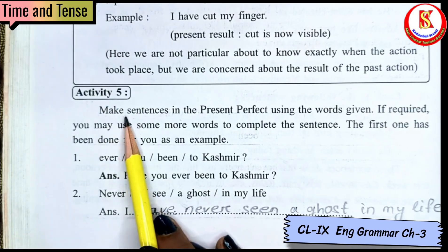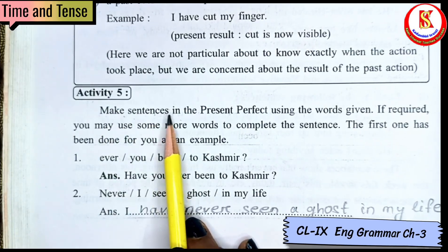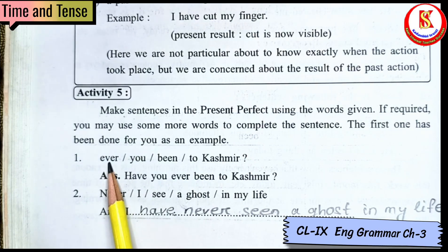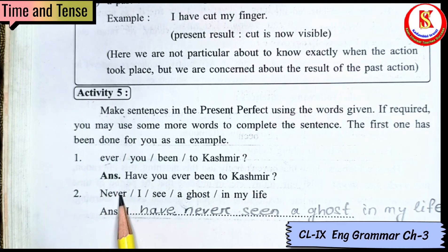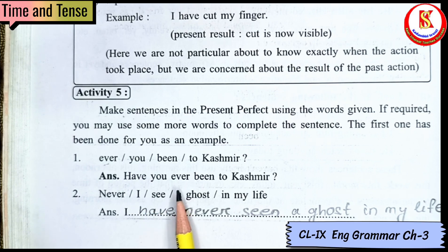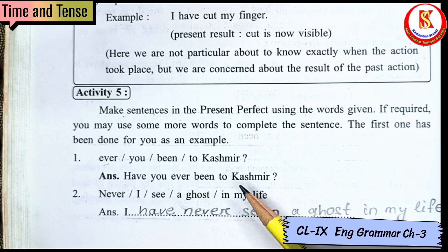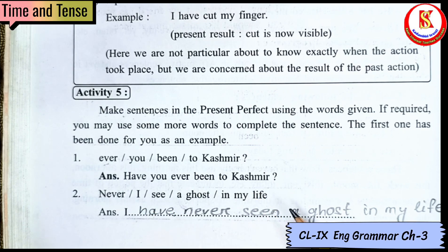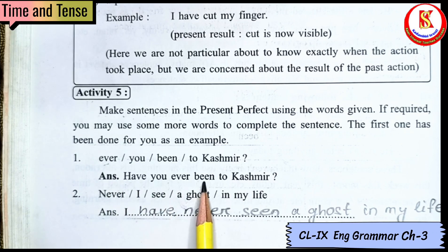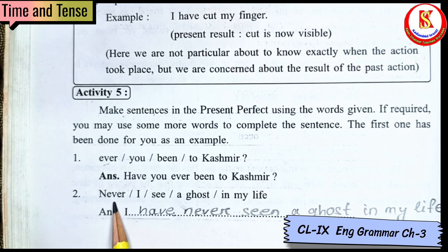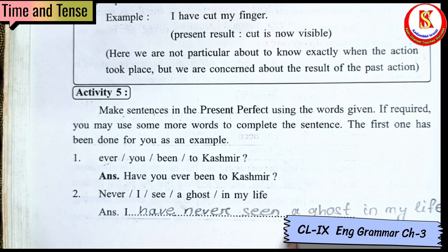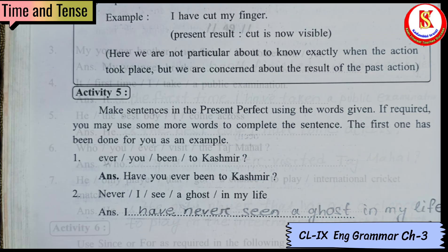Next is Activity 5: Make sentences in present perfect using the words given — ever, never, just, yet, already, first time, last time. When you get these phrases, you have to use present perfect. So: 'Have you ever been to Kashmir?' and 'I have never seen a ghost in my life.'